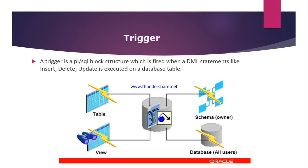You can only implicitly invoke a trigger. While a trigger is enabled, the database automatically invokes it whenever a triggering event occurs. When a trigger is visible, we can create the trigger on tables, schemas, views, and database. By default, a trigger is created in enabled mode.